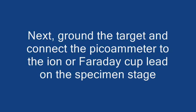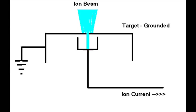Before we do that, we need to ground the target and move the picoameter lead to the ion lead on the specimen stage. The way this works is the ion beam is much larger than the 250 micron hole and only the ions that make it through that little hole make it into the Faraday cup where they're counted. So, whereas we're hitting the target with about 5 to 6 microamps of current, we're going to get a much smaller amount of current into the Faraday cup.